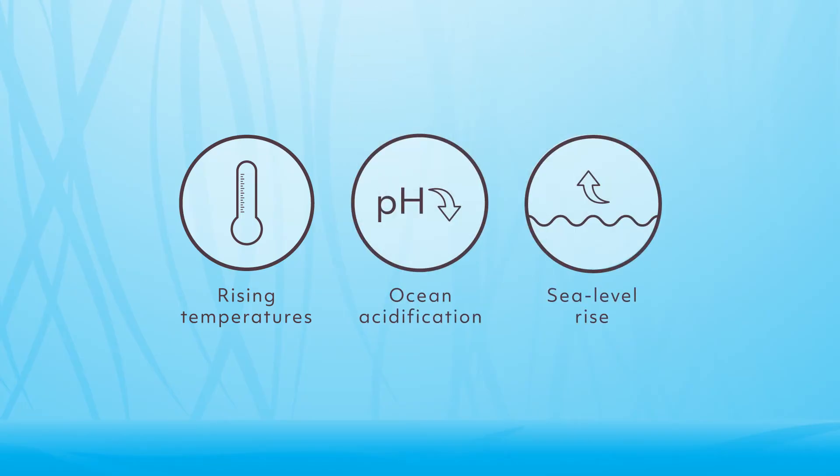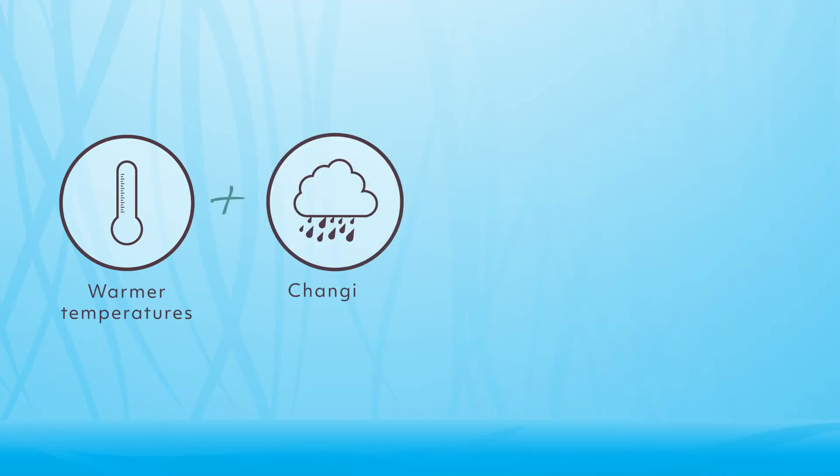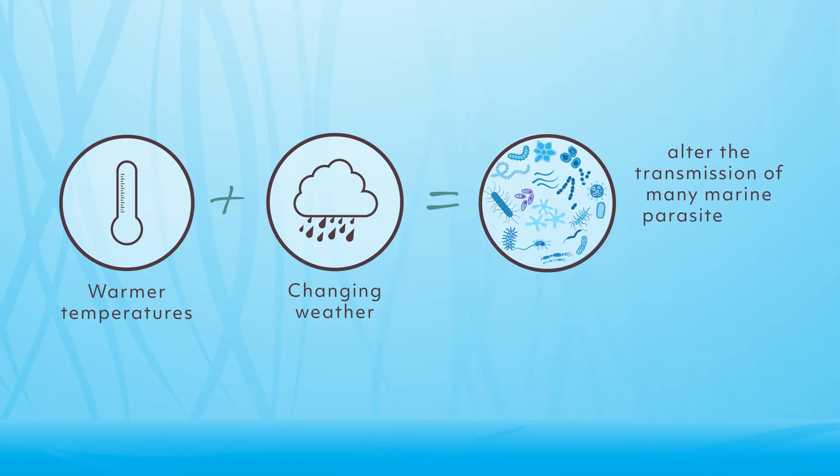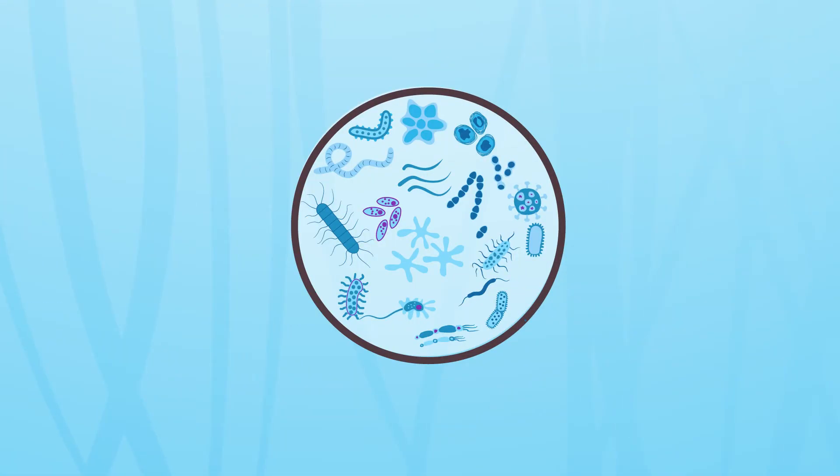Another often overlooked effect is that warmer temperatures and changing weather patterns can alter the transmission of many marine parasites and infectious diseases. Such diseases don't just impact their host populations, as cascading effects can disrupt entire ocean food webs.